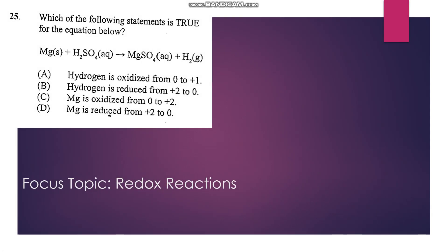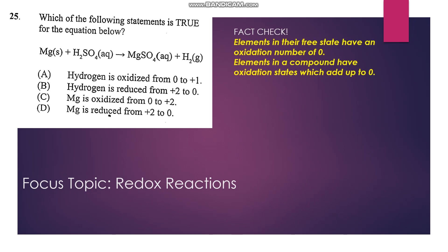Number 25: Which of the following statements is true for the equation below? When magnesium reacts with sulfuric acid we get magnesium sulfate plus hydrogen. So hydrogen is oxidized from 0 to +1—that's false. Hydrogen is reduced from +1 to 0—that's false. So our answer would be C: magnesium is oxidized from 0 to +2.